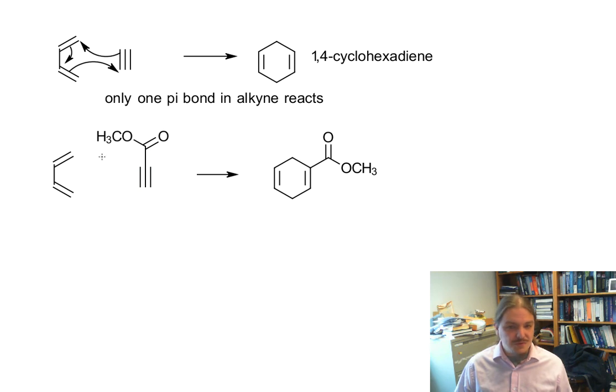And if you were to have two groups on the alkyne, you'd end up with two groups on the product. So generally, this is an example of everything alkenes can do, alkynes can do also. The product looks a little different.